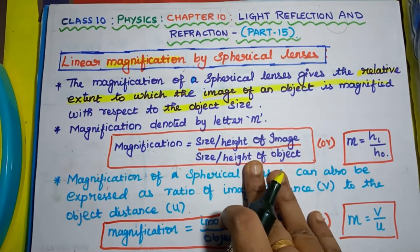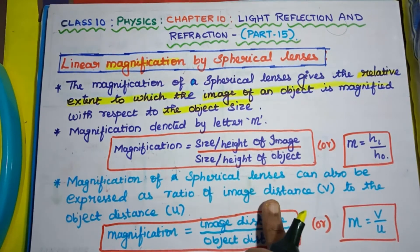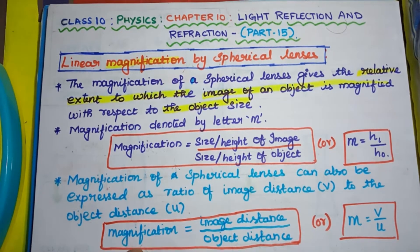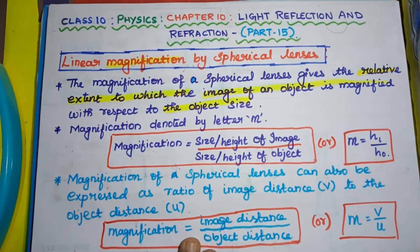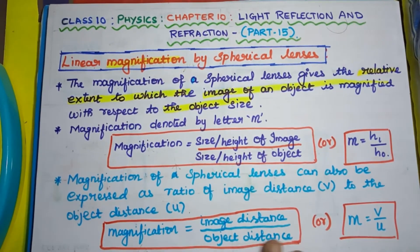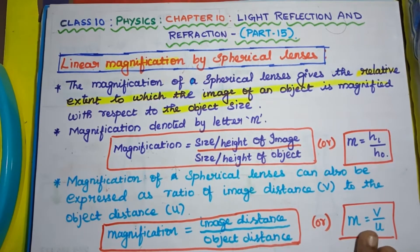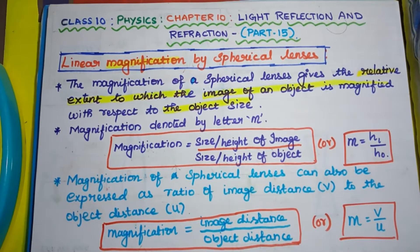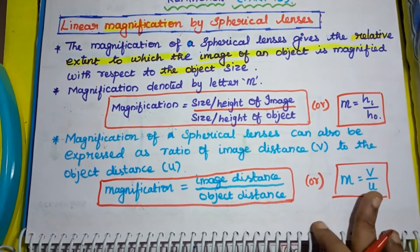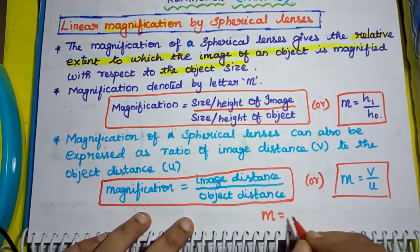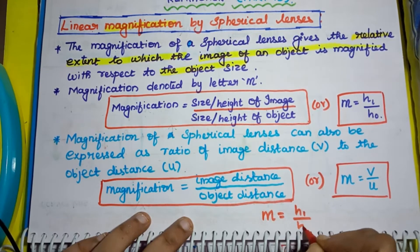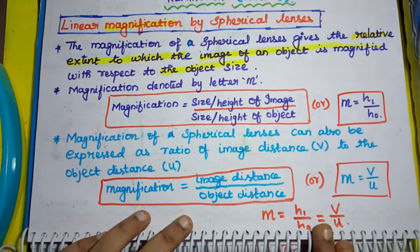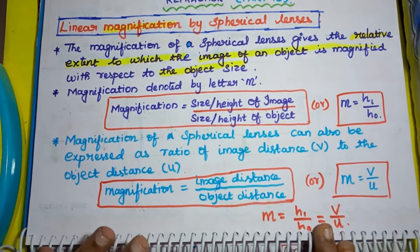Next, magnification of spherical lenses is also expressed based on the distance of the image and the distance of the object. So the ratio for magnification can also be written as image distance over object distance. The formula for this ratio is M = V / U, where V represents image distance and U represents object distance. Using these two formulas, we can arrive at: M = H1 / H0 = V / U. These are the common formulas for magnification of spherical lenses.